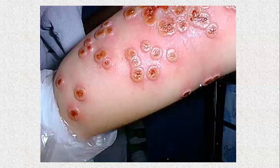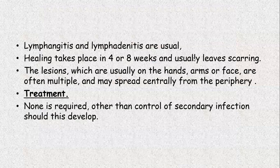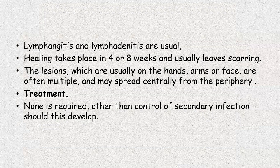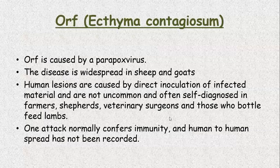These are the multiple cowpox lesions. Lymphangitis and lymphadenitis are usual. Healing takes 4 to 8 weeks and leaves scars. The lesions, which are usually on hands, arm, and face, are often multiple and may spread centrally from the periphery. Treatment. None is required other than control of secondary infection — topical antibiotic creams are usually sufficient.